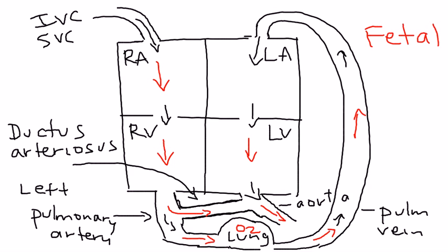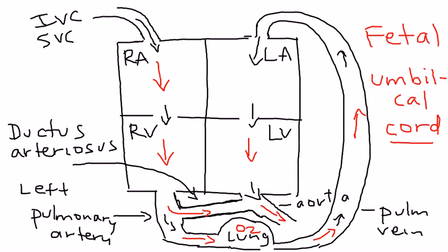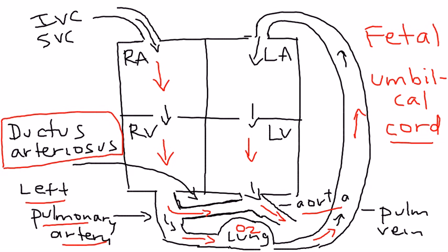The aorta then pumps blood out into the entire body, bypassing the lungs, because the lungs in utero are not yet developed. The oxygen comes from the mother via the maternal circulation through the umbilical vessels. So the ductus arteriosus is a connection between the left pulmonary artery and the aorta, and in utero, blood travels from right to left.